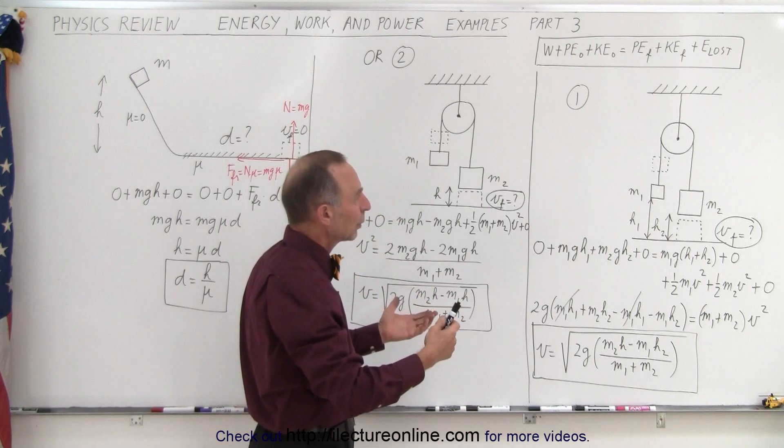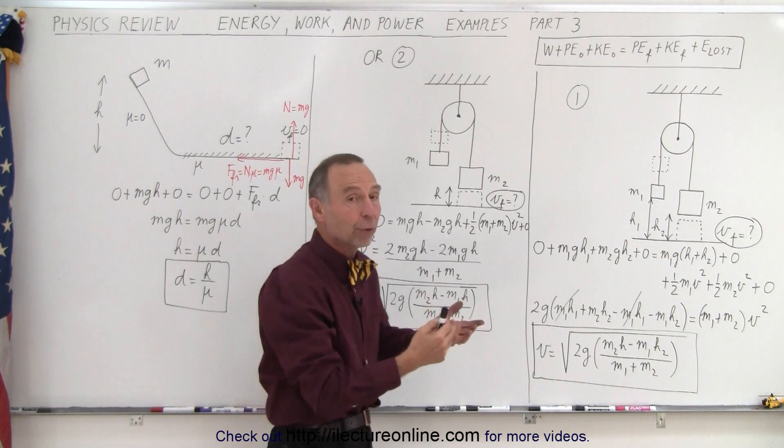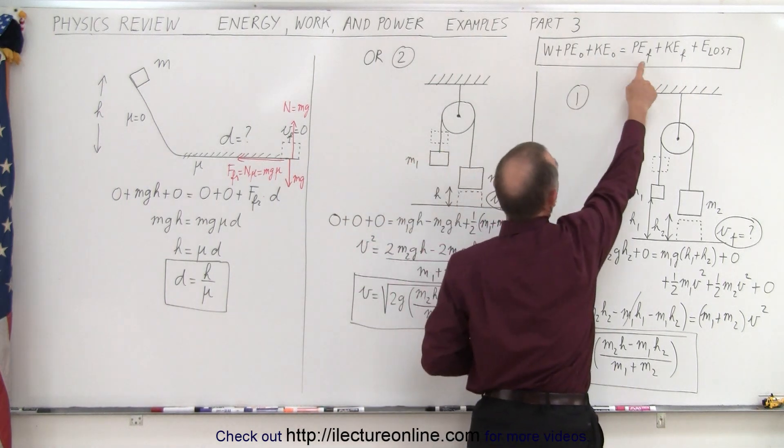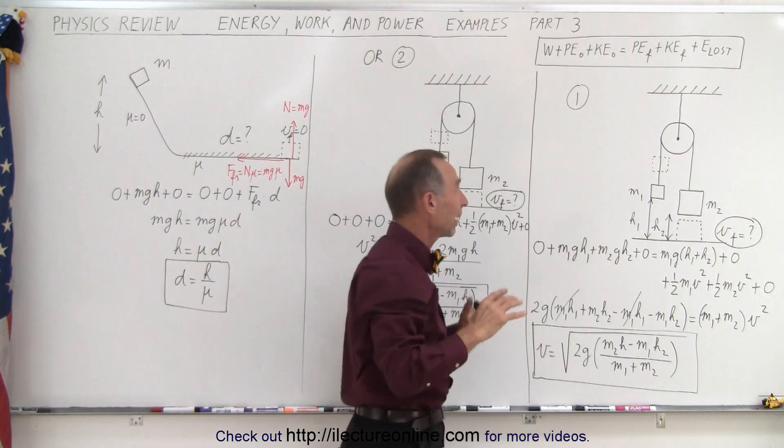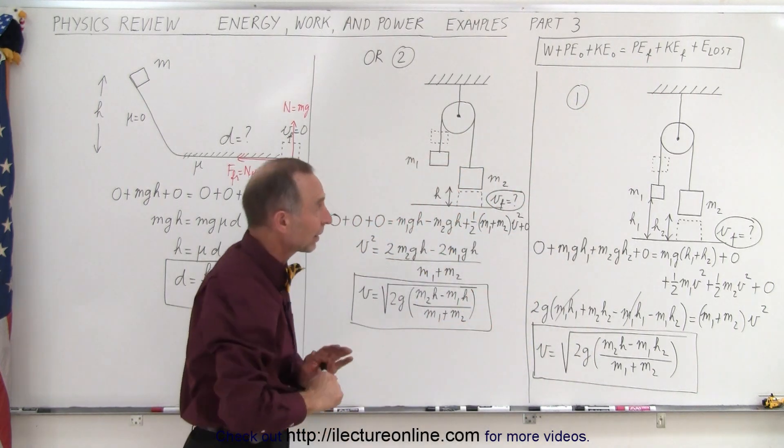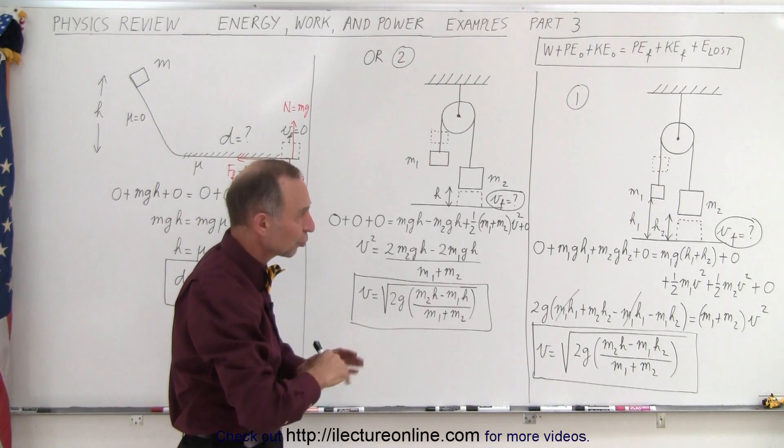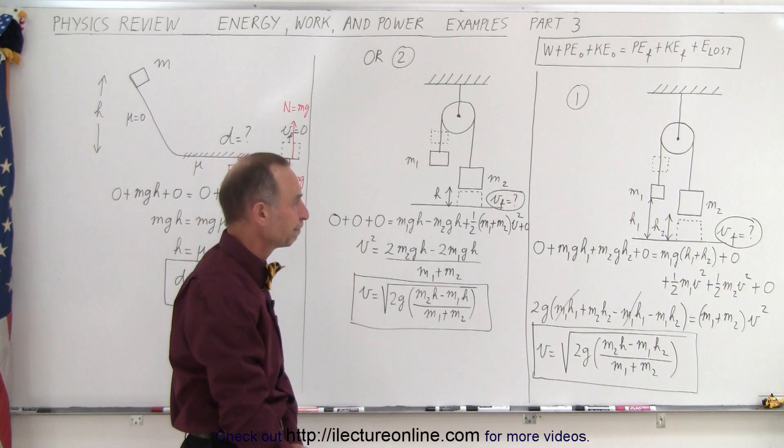Now in this case with a pulley we're not putting any work into it. There's no forces acting on it besides the force of gravity, and that's accounted for by the potential energy. There's no energy loss because there's no friction on the pulley and there's no wind resistance, so we ignore all that.